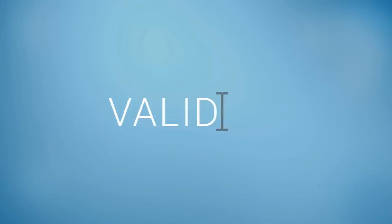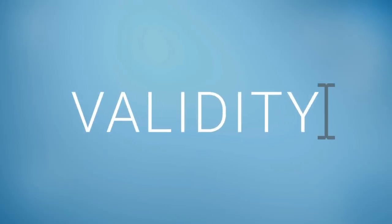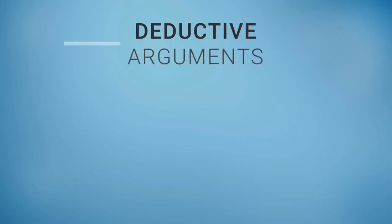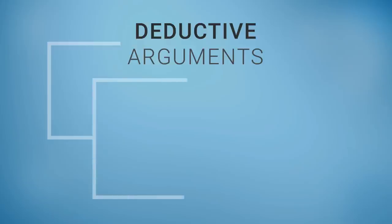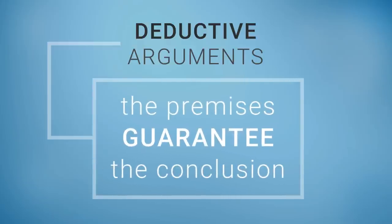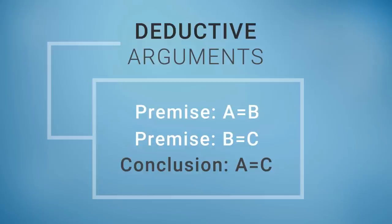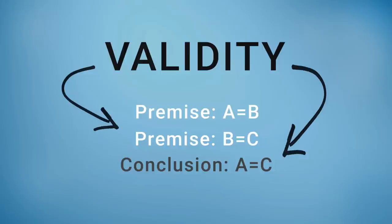We hear the words valid and validity used all the time, but I want to talk about what validity means in a technical sense with regard to something we've already discussed: deductive arguments. As a reminder, a deductive argument is an argument where the premises logically guarantee the conclusion. For example, if A is B and B is C, A must be C — there is no alternative. The concept of validity is a tool for evaluating the internal logic of a deductive argument.